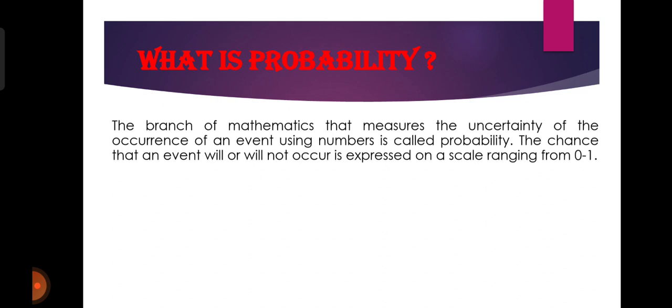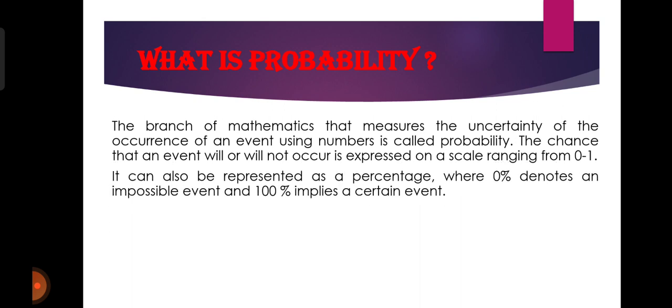What is probability? The branch of mathematics that measures the uncertainty of the occurrence of an event using numbers is called probability. The chance that an event will or will not occur is expressed on a scale ranging from 0 to 1. Probability, mathematics की उस branch को कहा जाता है जो किसी particular event के occur होने की uncertainty को measure करती है। किसी भी particular event के occur होने के chances को हम measure करते हैं between the scale 0 to 1, जो उसकी probability की value है वो 0 और 1 के बीच में lie करती है।